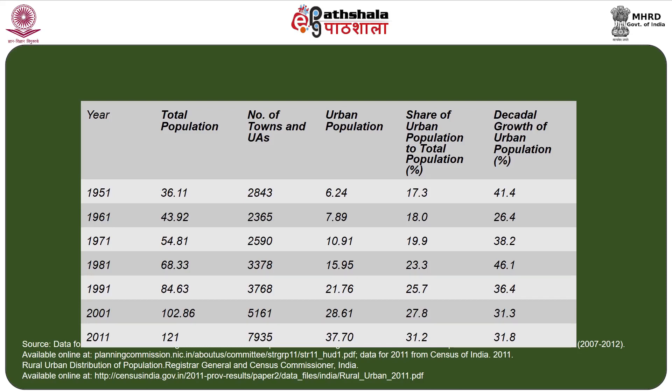If you look at the decadal growth rate of urban population, it was 41 percent in 1951, came down to 26 percent in 1961, then 38 percent in 1971, and further increased in 1981 to 46 percent. From there the decline started: 36 percent in 1991, 31 percent in 2001, and almost equal at 31.8 percent in the 2011 census.